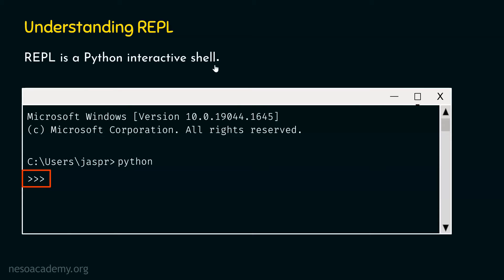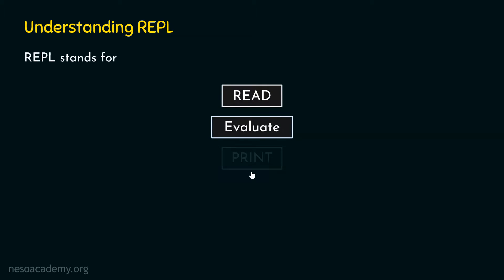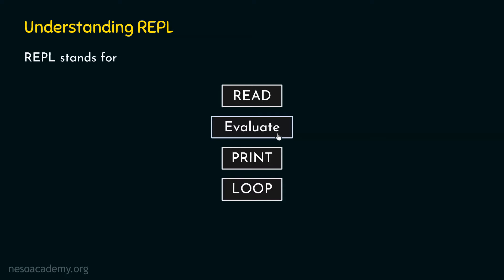REPL is a Python interactive shell — in reality, read, evaluate, print, loop. Why is it called REPL? It reads the statement, which means the command you provide to Python. Then Python evaluates it, meaning it understands and processes what you have written. After processing and calculating, it prints the result on the screen. Then again, it starts the same process — which means it loops.